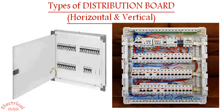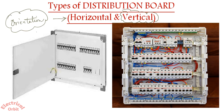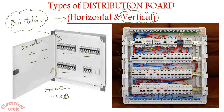TPN DBs are of two types: horizontal and vertical, referring to their orientation. In a horizontal TPN DB, the breakers are oriented in a horizontal form. In a vertical TPN DB, the breakers are in a vertical structure. The rail on which the breakers are mounted is called a din rail — in a horizontal TPN DB they are arranged horizontally, and in a vertical TPN DB they are mounted vertically.